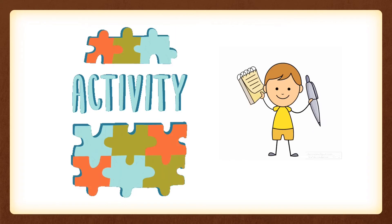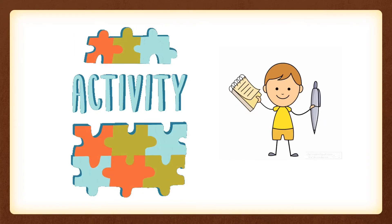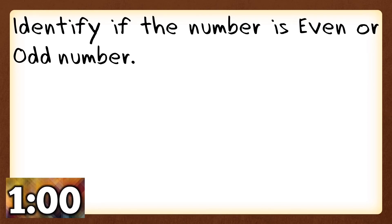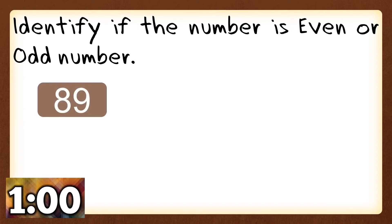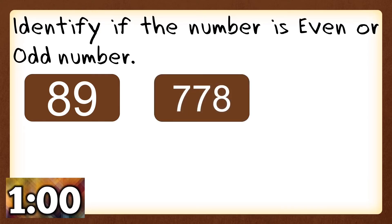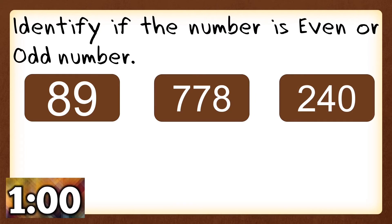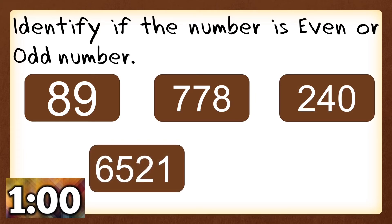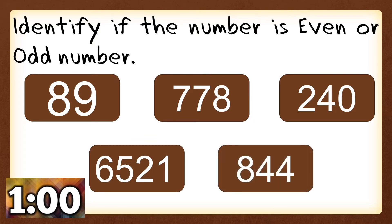It's activity time! Get your pen and paper ready to answer this simple activity. You'll have one minute to answer. Identify if the number is even or odd. The first number is 89, second is 778, number three is 240, number four is 6521, and number five is 844. You're going to identify if each number is even or odd. Your one minute starts now.